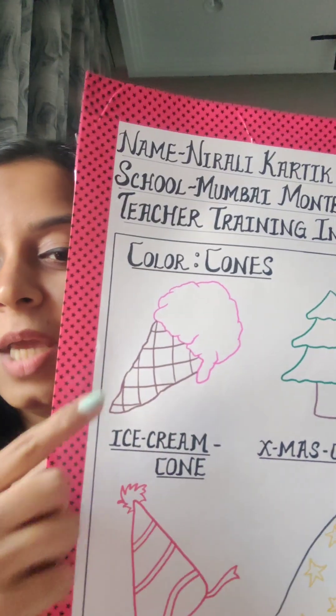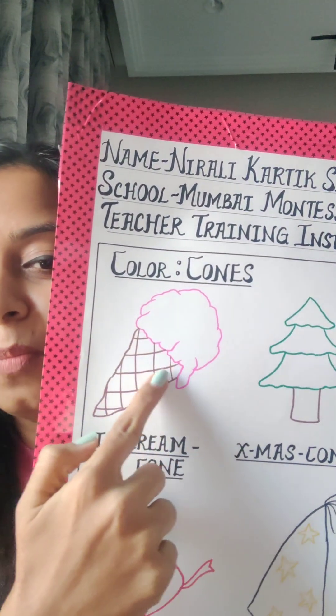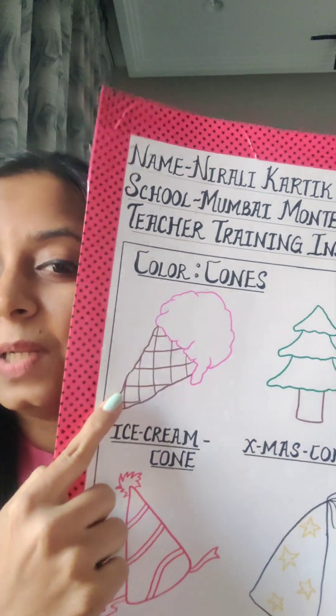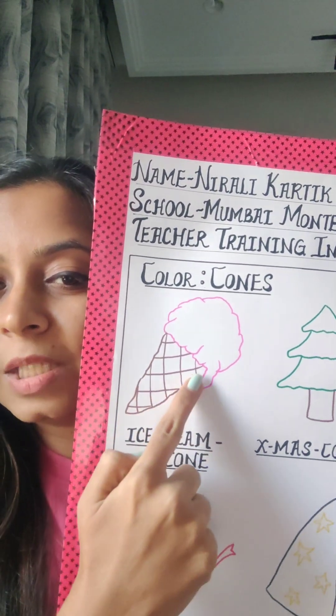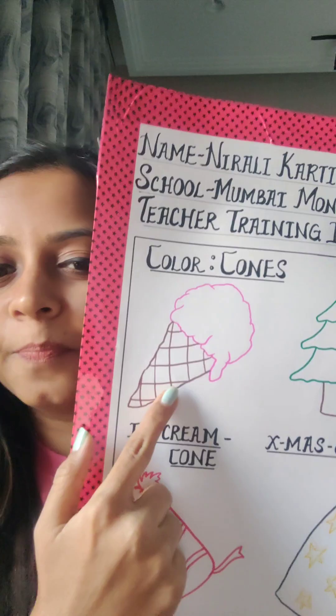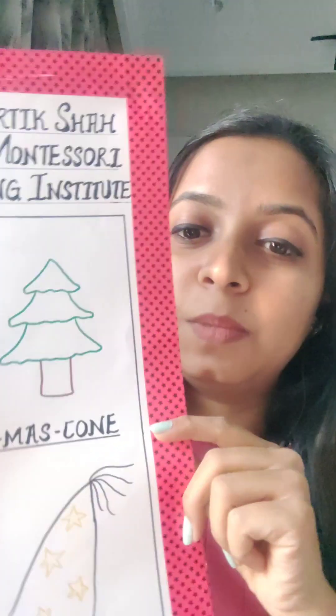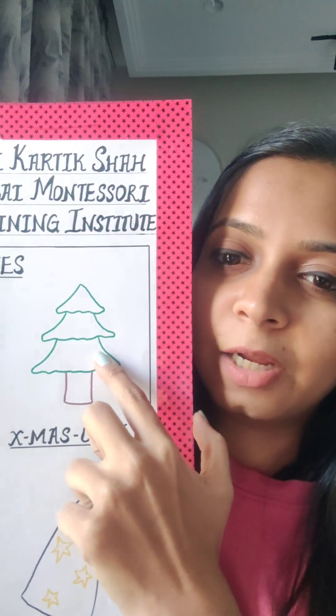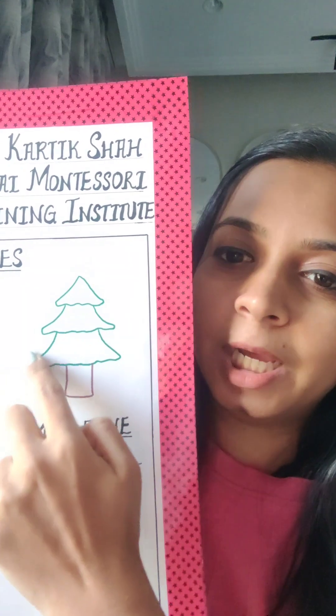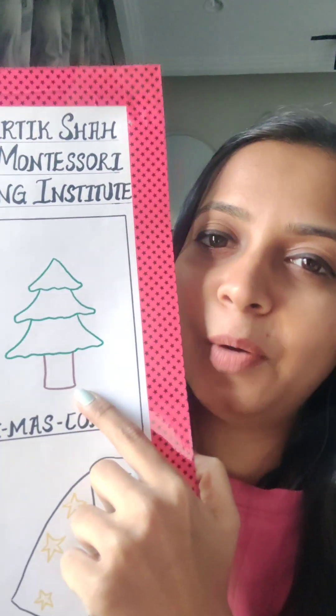Next we will go and learn about different cones that we see around and color them. Here we have this yummy pink strawberry ice cream. Let's color the ice cream in pink and the cone in brown. Next we have a Christmas tree — the tree is going to be green in color, which has a cone shape, and its trunk will be brown in color.